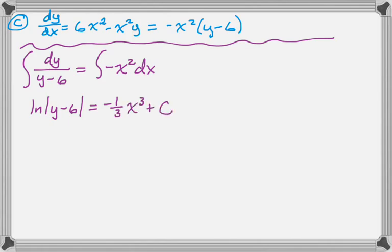So we get the natural log of the absolute value of y-6 equals -1/3 x³, but don't forget, plus c. If you forget plus c, you're doomed on this. Whenever there's a natural log, I like to exponentiate before I solve for c.